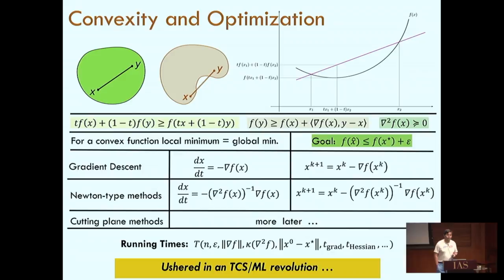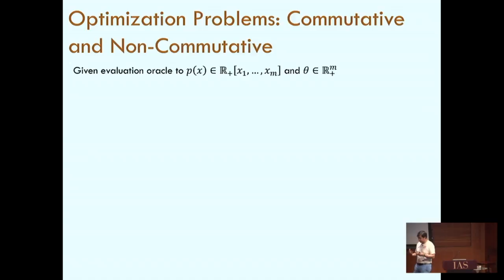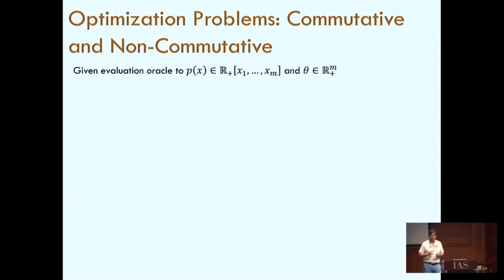Except in the last few years, there are also some very curious problems that have emerged — optimization problems for which we know how to solve them through methods, but we were not able to place them entirely in the framework of convex optimization. The first example: you're given a polynomial with positive coefficients, just assume it's a multilinear polynomial with non-negative coefficients. You can evaluate the polynomial at any input point. You're also given a starting point with positive entries.